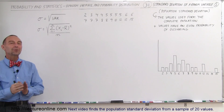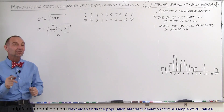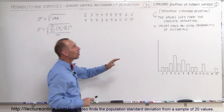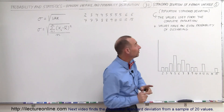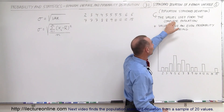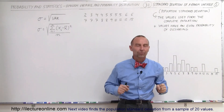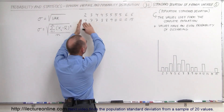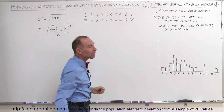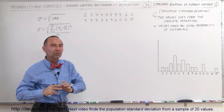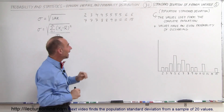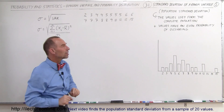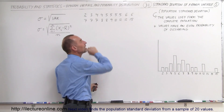Welcome to our lecture. We're going to show you how to calculate the standard deviation, starting with what we call the population standard deviation. That means the values used form the complete population. For example, we have a set of twenty numbers, and that's the entire population — there are no others — so we calculate the population standard deviation.